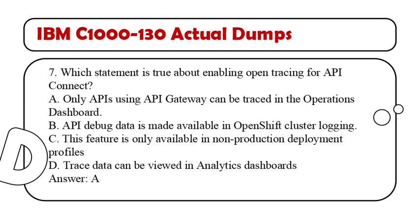Question 7. Which statement is true about enabling OpenTracing for API Connect? A. Only APIs using API Gateway can be traced in the Operations Dashboard. B. API debug data is made available in OpenShift cluster logging. C. This feature is only available in non-production deployment profiles. D. Trace data can be viewed in Analytics Dashboards. Answer: A.